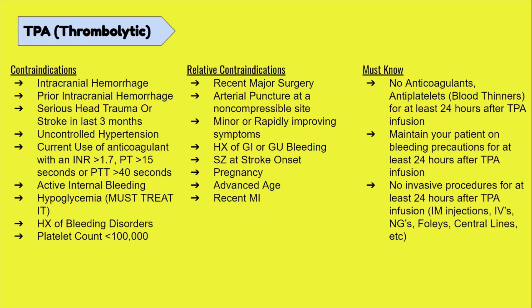There's also hypoglycemia — and because you're watching these videos, you're going to know that among the first things you have to do is check a blood sugar. Then there are relative contraindications that the provider should keep in mind, like any recent major surgery, arterial puncture at a non-compressible site, improving symptoms, a history of GI bleeding, pregnancy, advanced age, recent myocardial infarction, and a seizure at stroke onset.